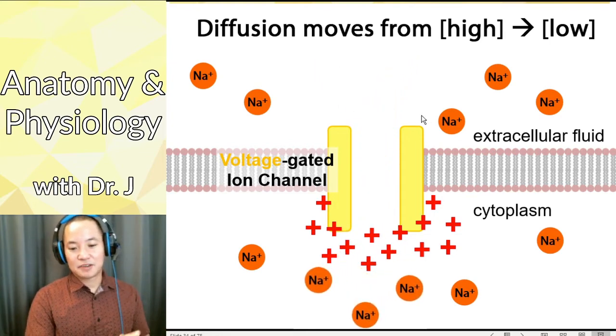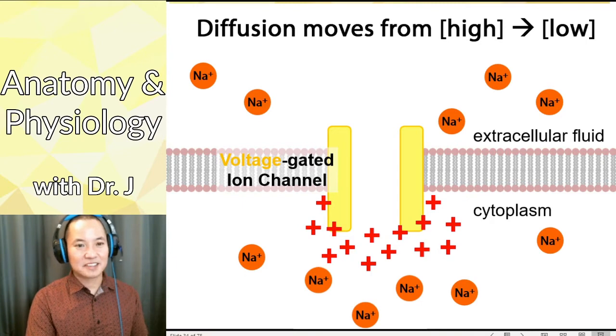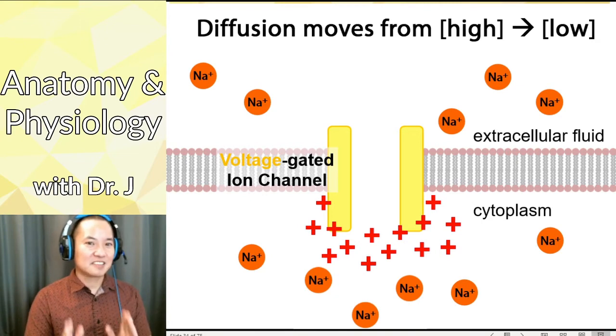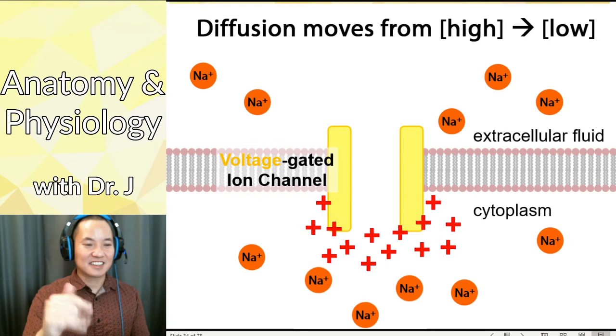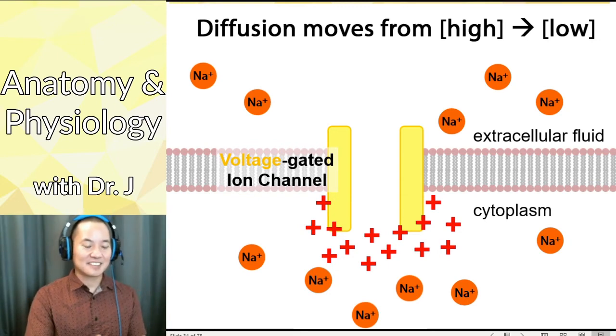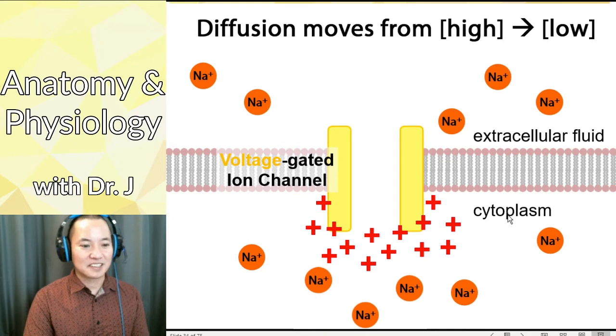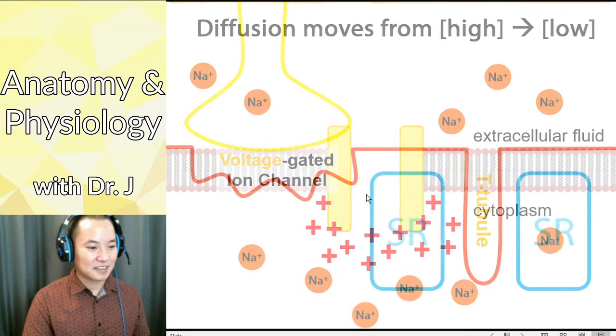Now, if some of you have more advanced classes, you might be thinking about what about electrical gradient? I think at this point, it's easier just to think about concentration differences and which has higher on the outside and inside than to talk about both the concentration and electrical at the same time, especially since I think a lot of people haven't had physics yet or chemistry. So don't worry too much about it. But if you're going to take more advanced classes, they might teach you about that.